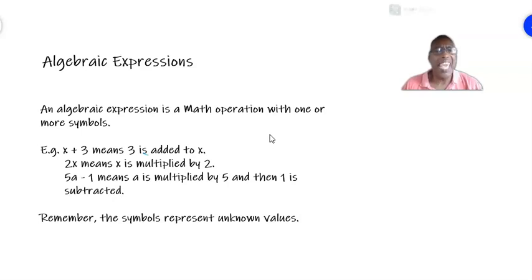X plus 3. What does X plus 3 mean? X is the symbol. It's unknown. It represents an unknown value. You don't know what it is. But you are adding 3 to X. And that's exactly what it means. You are adding 3 to a certain number represented by X.